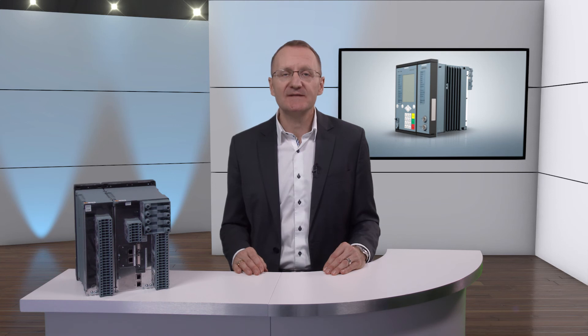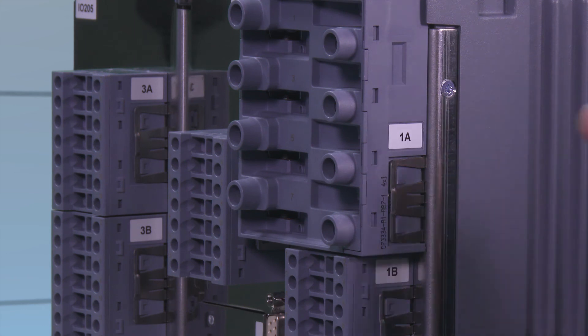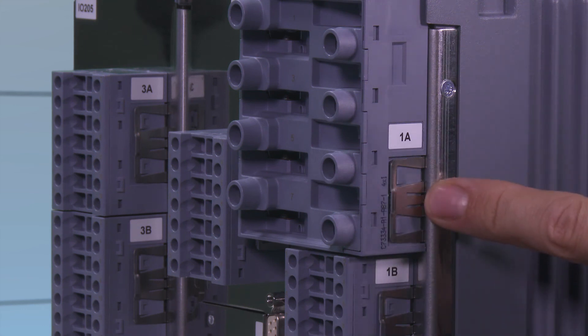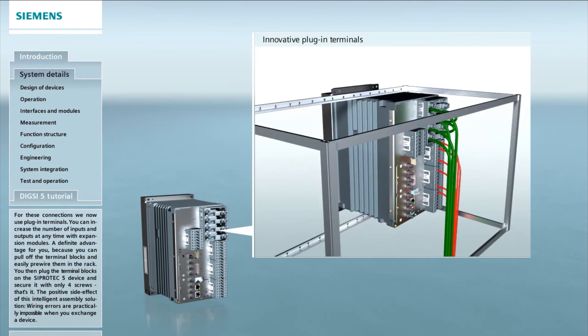Further information on the assignment of terminals can be found in the device manual. All terminal blocks have spring clips on the sides, which can be used to easily remove all process connections from the device without having to disconnect the process cables. This makes it possible to pre-wire the cabinets in which the devices will be built into, and to mount the protection devices and connect the terminals on site.